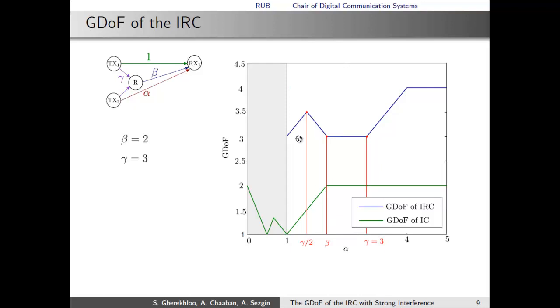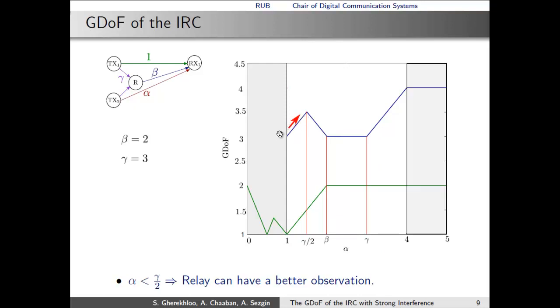In the regime where alpha is below gamma over 2, which is here, the relay obtains a significantly better observation than the receivers. This can be utilized in such a way that the receivers can provide the relay with additional information in advance, not observable at the receivers, such that the relay is able to act like a cognitive relay, which means it can neutralize the interference. As interference has to be neutralized at both receivers, the resources from the transmitters to the relay have to be shared equally.